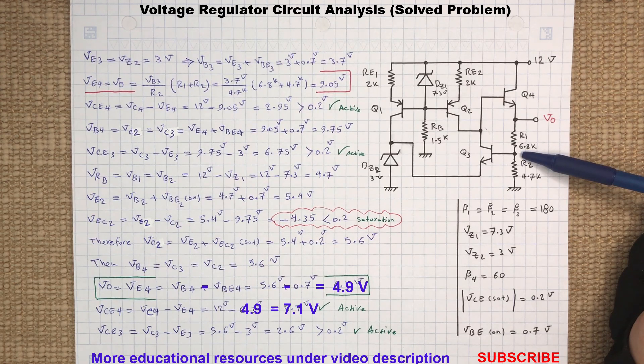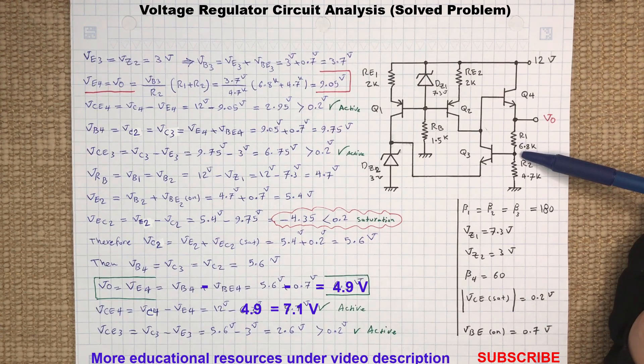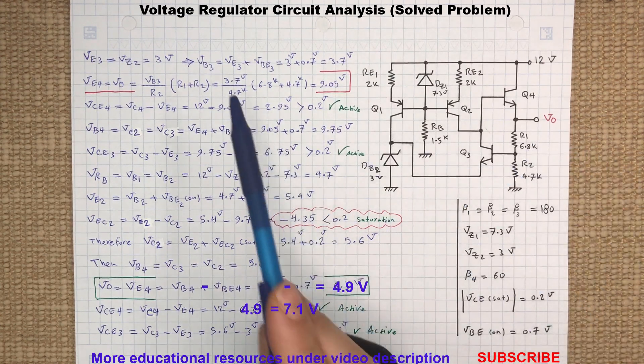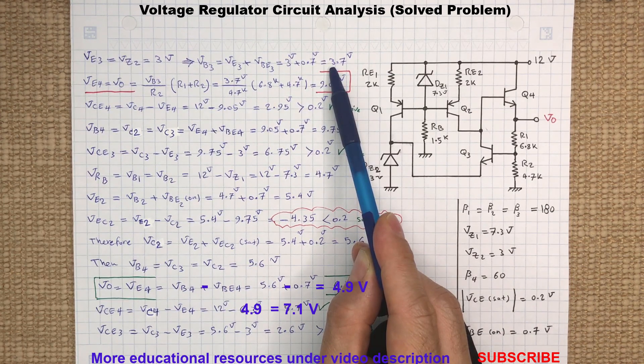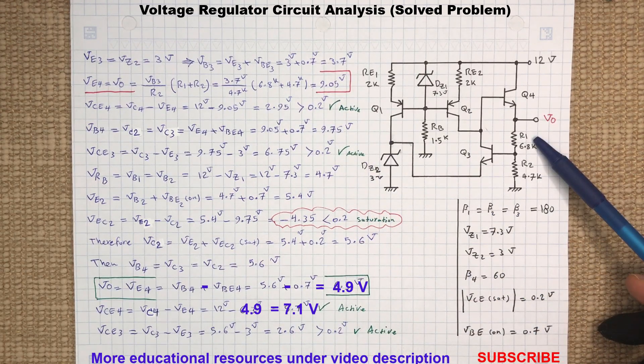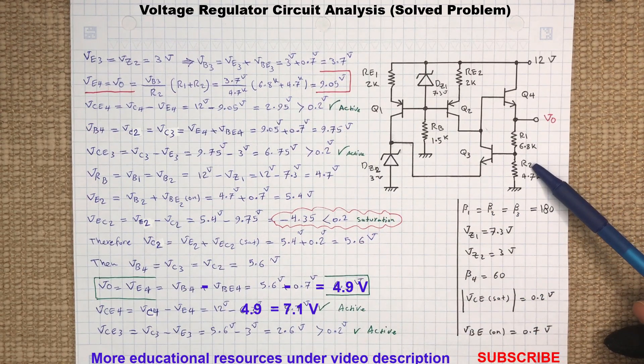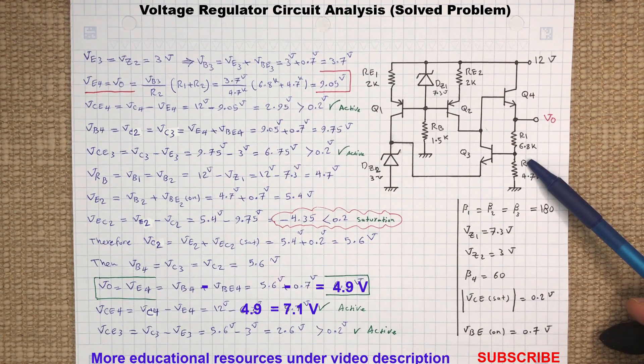Now we can find voltage at the base of Q3 by adding the base-emitter junction voltage VBE to the emitter voltage, which results in 3.7 volts, and this is also the voltage across the resistor R2. The resistor network made by R1 and R2 is basically a voltage divider where the voltage across R2 is already found.